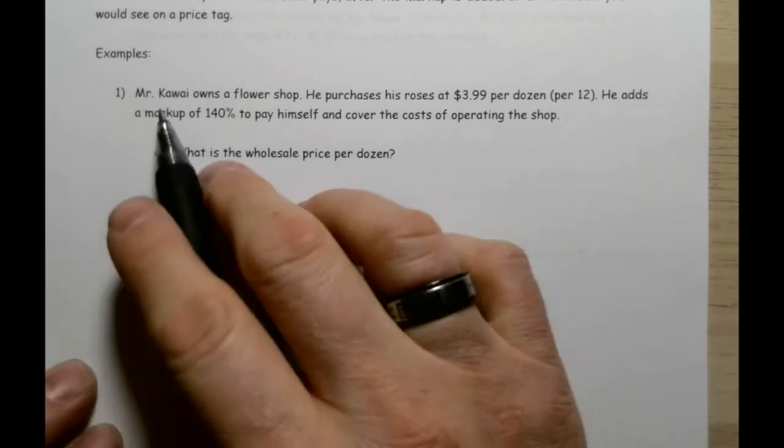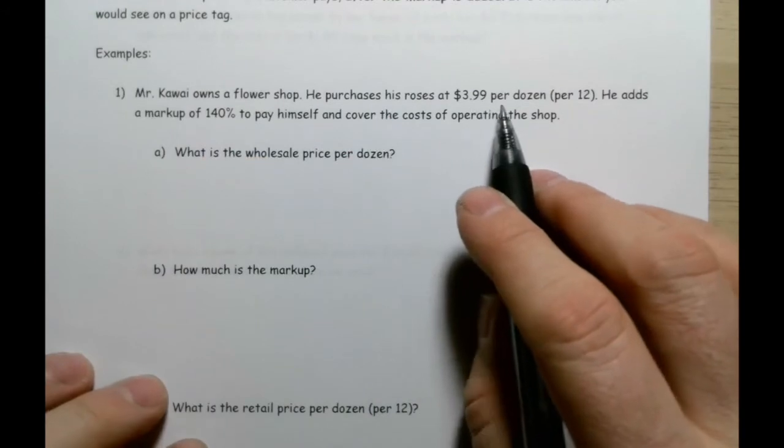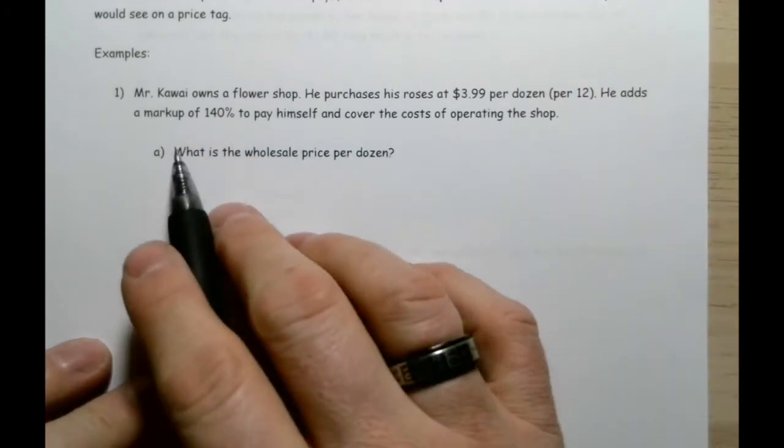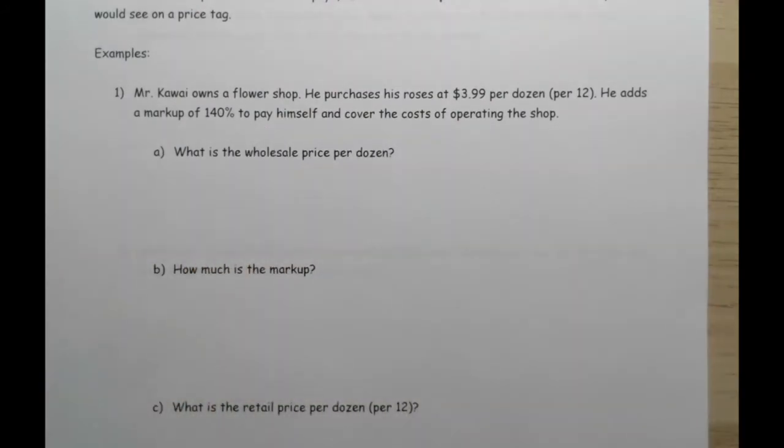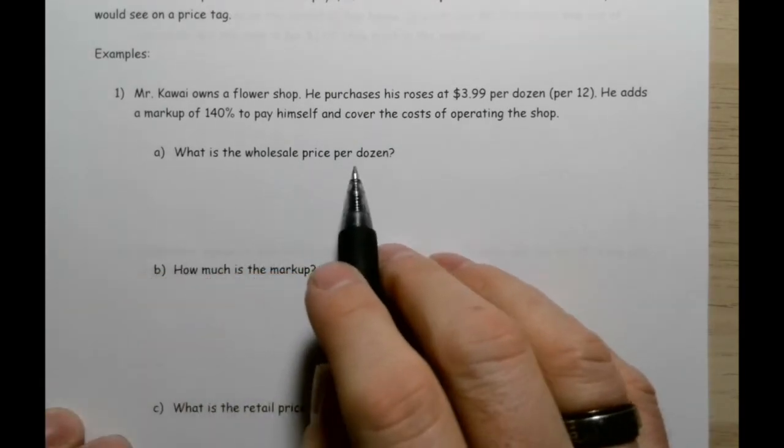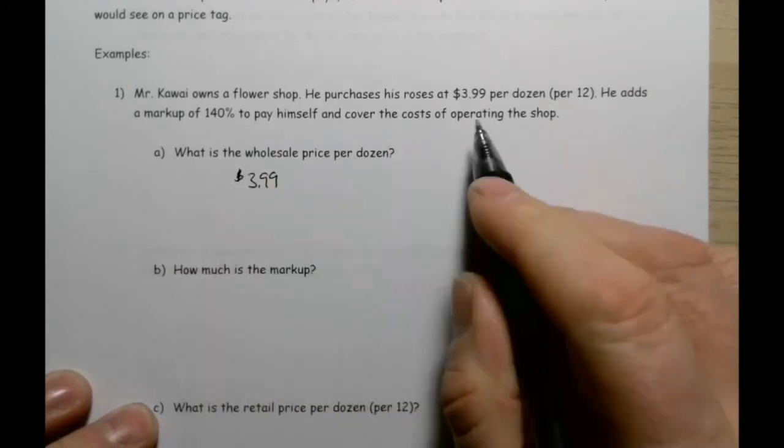Let's take a look at a few examples. Mr. Kawai owns a flower shop. He purchases roses at $3.99 per dozen. He adds a markup of 140% to pay himself and cover the costs of operating the shop. That's what that markup is - he's that middleman bringing the roses from wherever they're growing them and presenting them to you, the consumer. So what is the wholesale price per dozen roses? Well, that is going to be $3.99. That's what he pays.